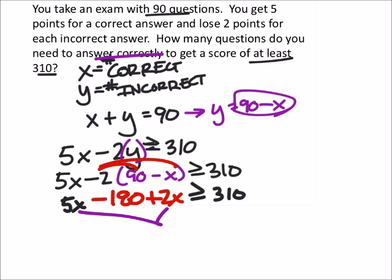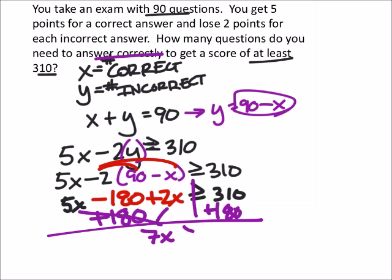And then I'll combine my x's. So I've got 7x. And I guess at the same time, if you wanted to, you could add 180 to both sides. So add 180, this must be greater than or equal to 490.